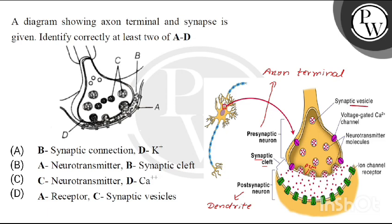Inside the synaptic vesicles, what do we mean by these? Neurotransmitter molecules. And if we look at the pre-synaptic membrane, there are some channels here. These channels are voltage-gated calcium channels.